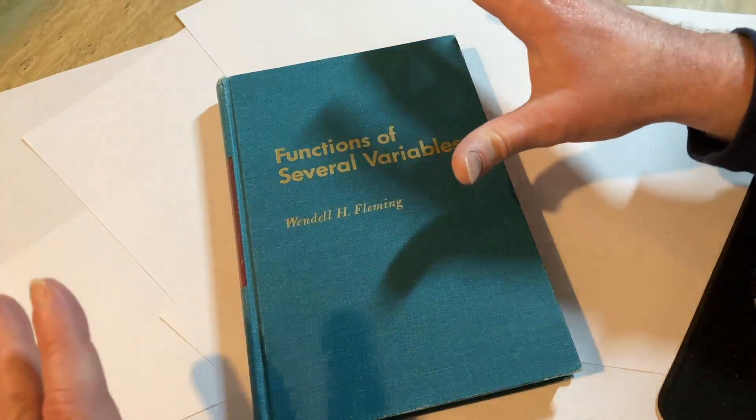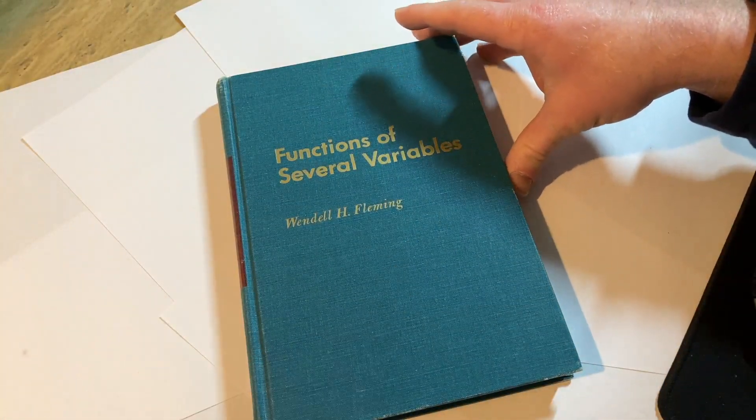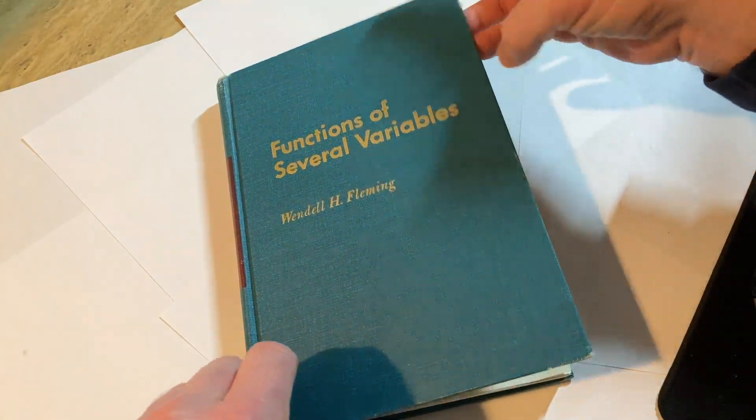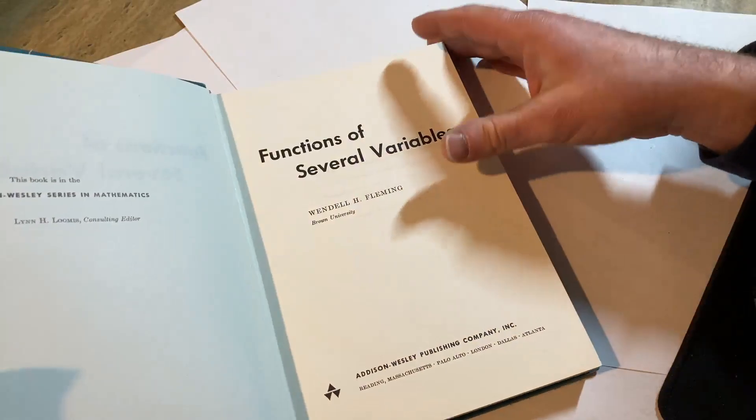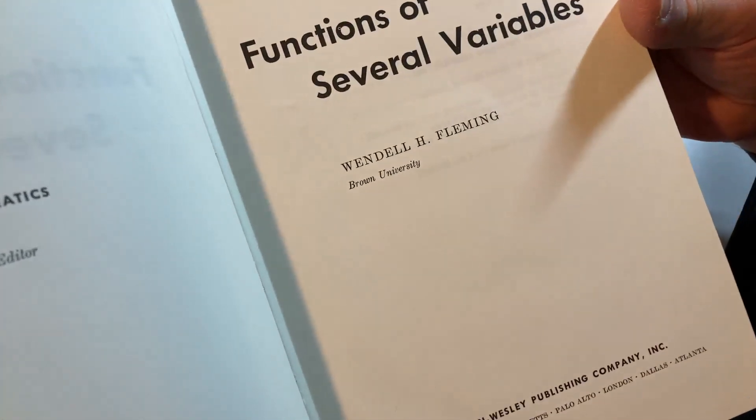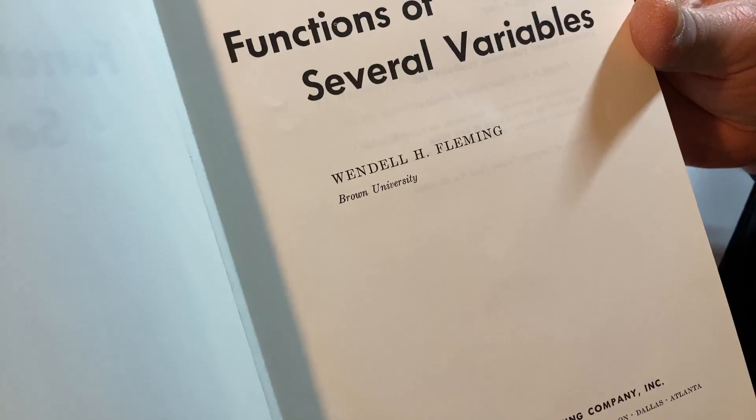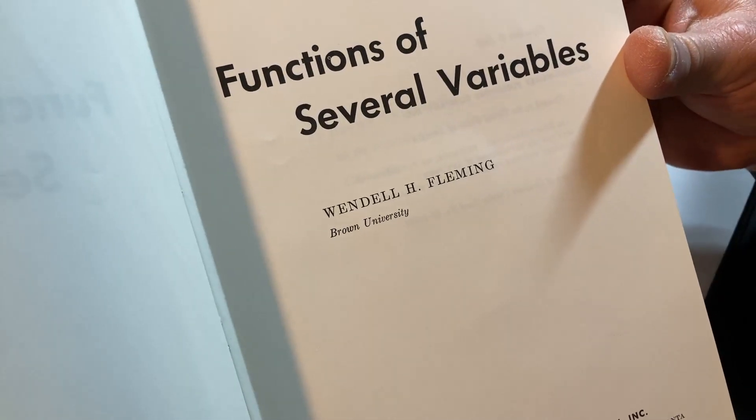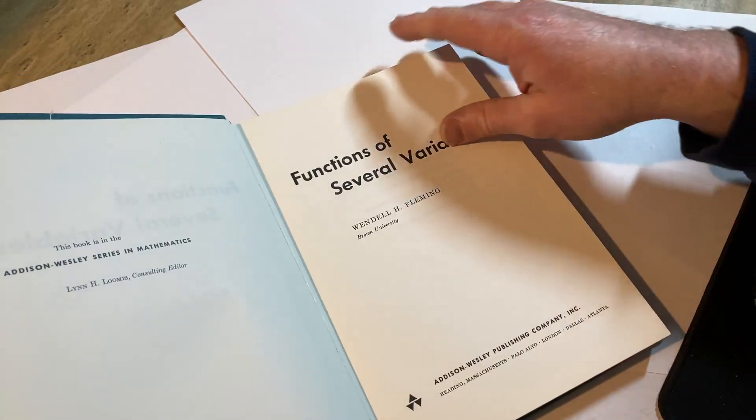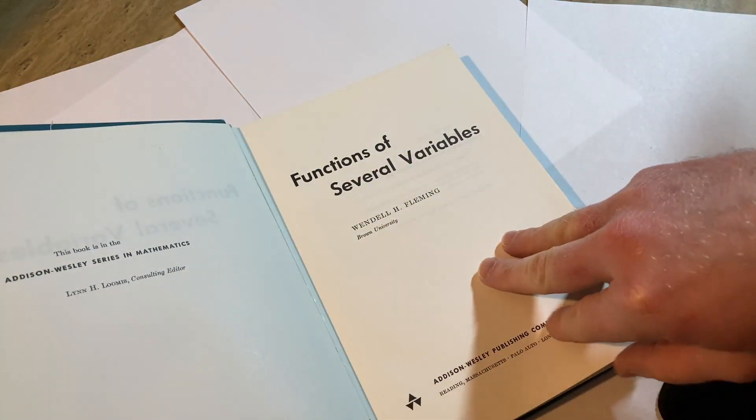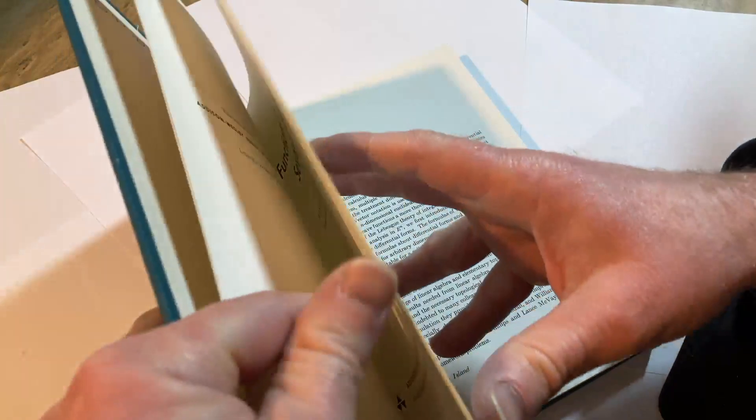Let's open it up and take a look at what this book contains. A really clean book, it's got a really nice layout, just your typical clean math book layout. Functions of Several Variables, Wendell H. Fleming, Brown University. Brown is an Ivy League school, an extremely good school for mathematics. Wendell was a professor there, and he even dedicates the book to Brown.